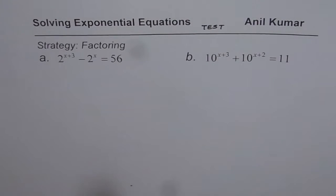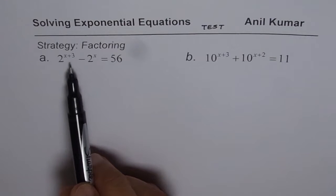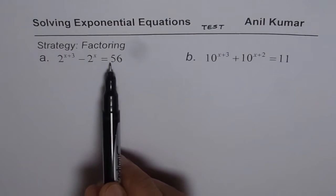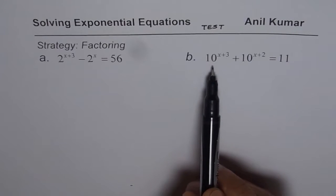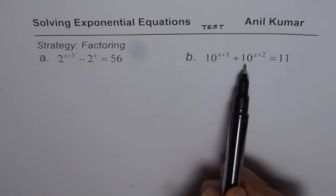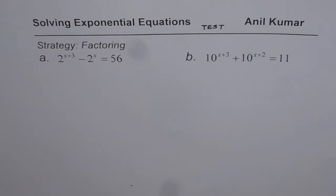We have two exponential equations here. The first one is 2 to the power of x plus 3 minus 2 to the power of x equals 56. You need to solve for x. The other one is 10 to the power of x plus 3 plus 10 to the power of x plus 2 equals 11.